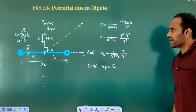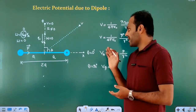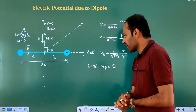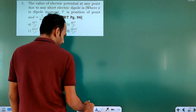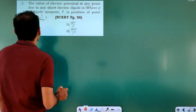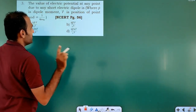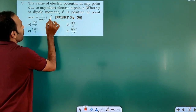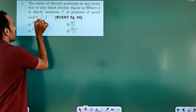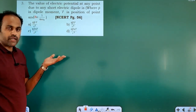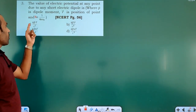That is all about electric potential due to an electric dipole. Now for the first question: the value of electric potential at any point due to a short electric dipole is — where P is dipole moment, r is the position vector of the point, and K is 1 by 4 pi epsilon naught.